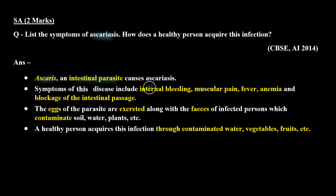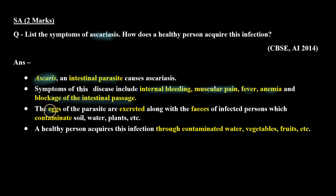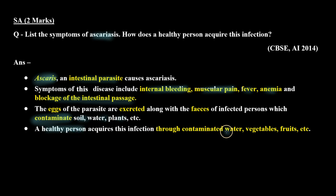Is disease ke symptoms hain: internal bleeding, muscular pain, fever, anemia, and blockage of the intestinal passage. Is disease mein causative organism hai Ascaris. Iske jo eggs hote hain, human ke fecal matter ke saath bahar aa jaate hain aur uske baad soil, water, plants aur bohut saari cheezon ko contaminate karte hain. Toh ek healthy person mein yeh infection contaminated water, vegetables, or foods ke through aata hai.